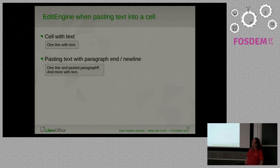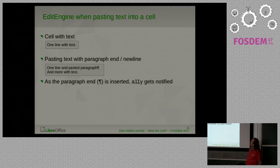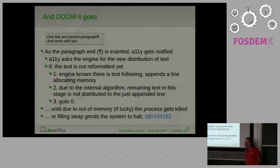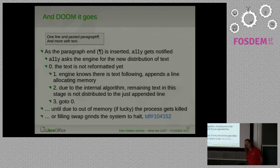Now consider a similar scenario: pasting text into a cell. Starting with the same cell context, we paste a piece of text including a paragraph break — previously copied from another cell. Just as with typing, when the paragraph end is inserted, accessibility gets notified. But we are in the middle of a paste operation. Accessibility wakes up and asks the edit engine for the new distribution of the text — but the text has not been reformatted yet, so the edit engine doesn't know how it's actually distributed.